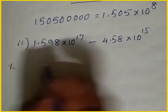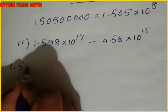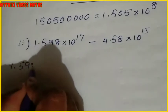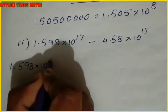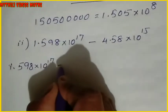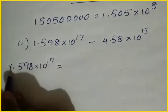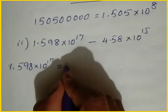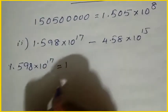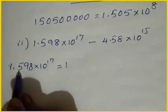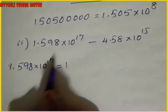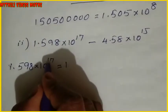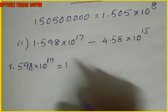The next expression is 1.598 into 10 power 17. Same approach: take 1.598, which has 3 digits after the decimal. We need 17 total digits, so write 598 and then count from position 3 onwards up to 17, filling with zeros.